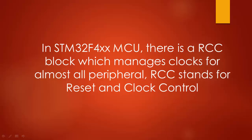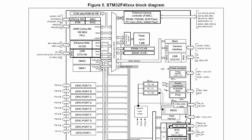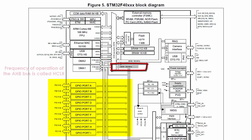This register handles enabling and disabling clocks for various peripherals. Remember that GPIO port is also a peripheral, and it is connected to the AHB1 bus. As you can see in the datasheet, GPIO ports are connected to the AHB1 bus which can run at a maximum of 168 MHz. The frequency of operation of the AHB1 bus is also called Hclock.